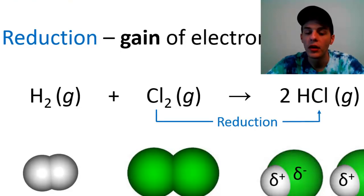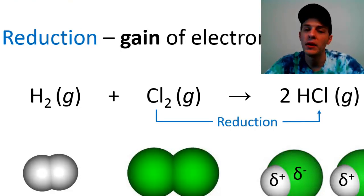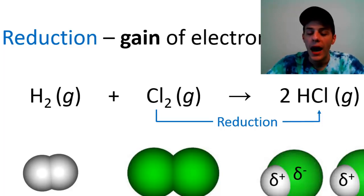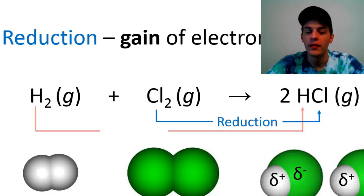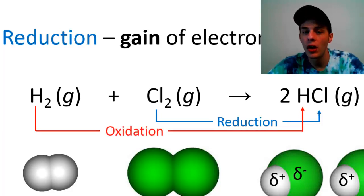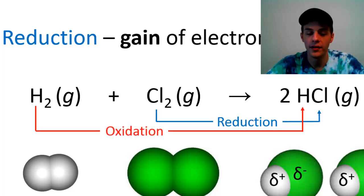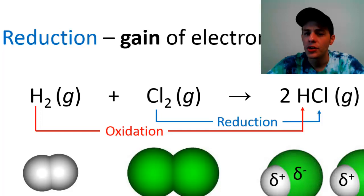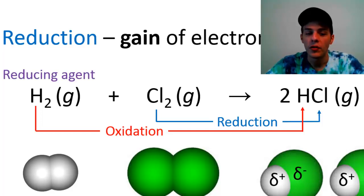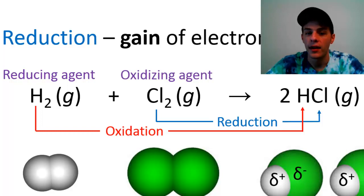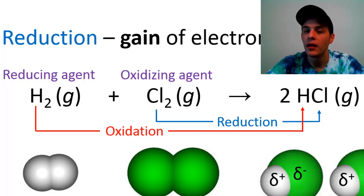Chlorine has been reduced going from pure diatomic chlorine to being part of an HCl molecule. Hydrogen, since it's lost electron density, has undergone oxidation. Furthermore, the substance that undergoes oxidation is called the reducing agent — so hydrogen is our reducing agent — and the substance being reduced is called the oxidizing agent, so chlorine is the oxidizing agent.